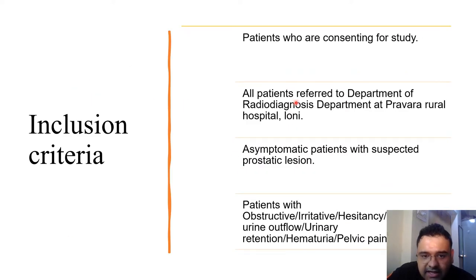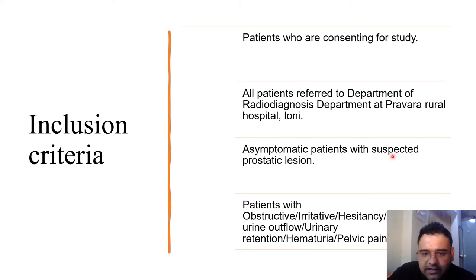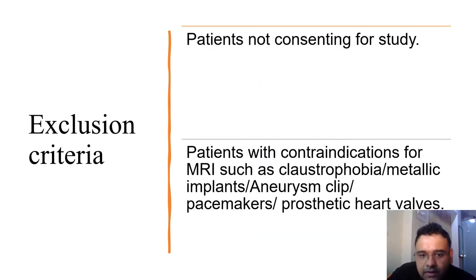Inclusion criteria include all patients giving consent for the study, patients referred to the department of radio diagnosis at Pravara Hospital Loni, symptomatic patients with suspected prostate lesions, and patients with obstructive uropathy, urinary retention, hematuria, or pelvic pain. Exclusion criteria include patients not giving consent and patients with contraindications for MRI such as claustrophobia, metallic implant, aneurysmal clip, pacemakers, and prosthetic heart valves.